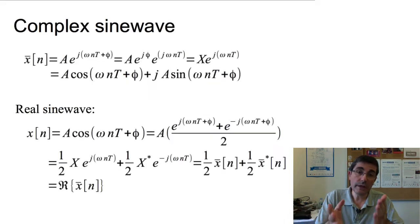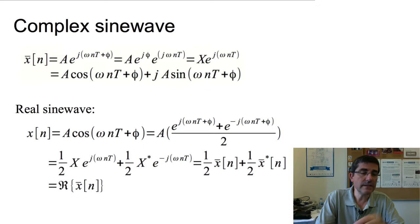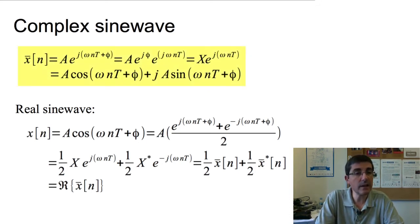Now, by using sinusoids, complex numbers, and what we just have seen, the Euler's formula, we can introduce complex sinusoids. So, in this case, the function x of n with a bar is a complex sinusoid. So, it can be expressed with this complex exponential that we just introduced. And there are several ways to represent the same function using this Euler's identity. So, please go through this equation and make sure that you understand it.